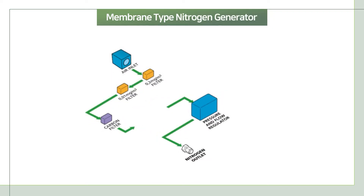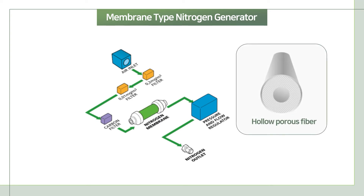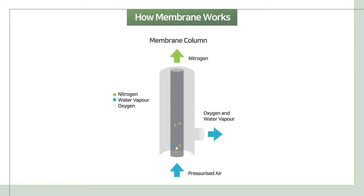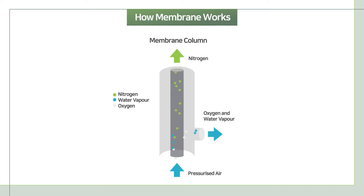The other type of nitrogen generation uses a membrane. Membrane type uses a membrane filled with a bundle of hollow fibers to separate nitrogen from air. The wall of the fibers selectively separates gas molecules in compressed air based on their diffusion rates. Oxygen and carbon dioxide are fast enough to permeate through the membrane wall, while relatively slow nitrogen is retained and passes along through the fiber.